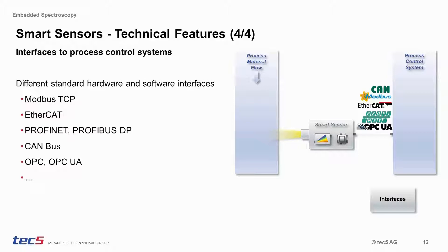Whether using a univariate or multivariate approach, our smart sensor device is capable of constantly providing the concentration of a specific ingredient in the product matrix. Our smart sensor platform offers a wide range of hardware and software interfaces for the onward transfer of such data to a PLC for further control and monitoring. Standard protocols like Modbus TCP, Profibus DP, OPC UA, and many more are supported. Our smart sensor devices not only transmit fully prepared analysis results in real-time — additional relevant sensor status information is also made available to a process control system or even to a cloud-based network.